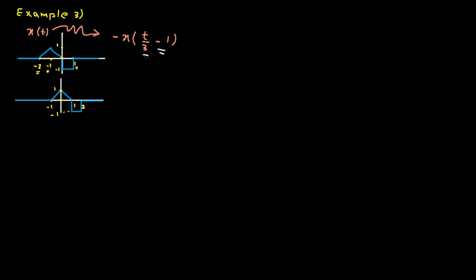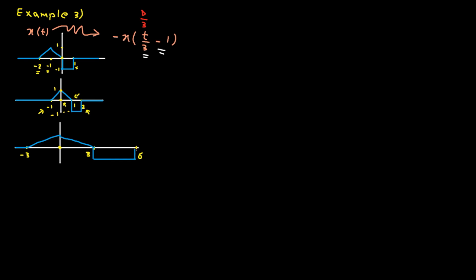Step number two: apply time scaling. The scaling factor is one third, which means we play the signal at one third of normal speed, so we expand the signal by a factor of three. Minus one goes to minus three, zero goes to zero, one goes to three, and two goes to six. Here is our scaled signal. The amplitude doesn't change.